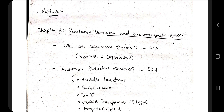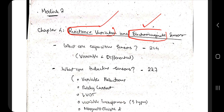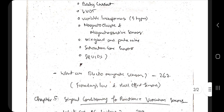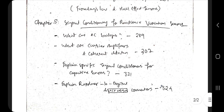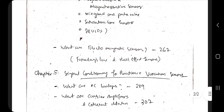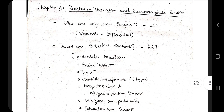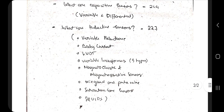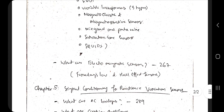In Chapter 4, we have reactance variation and electromagnetic sensors — two types: reactance variation and electromagnetic sensors — and signal conditioning for reactive variation sensors in the second chapter. The important topics in the first chapter are three: capacitive sensors, inductive sensors, and electromagnetic sensors.